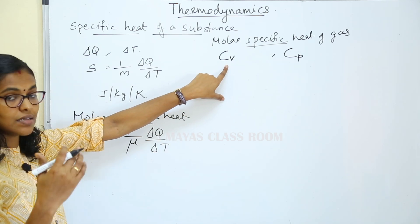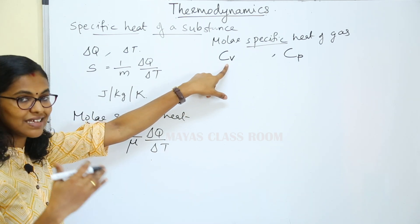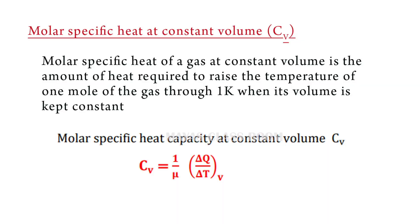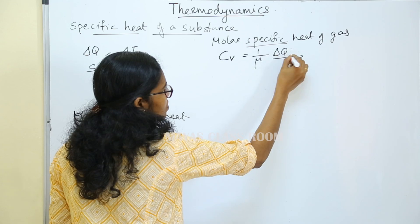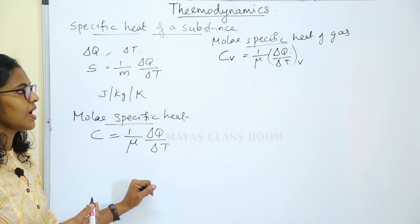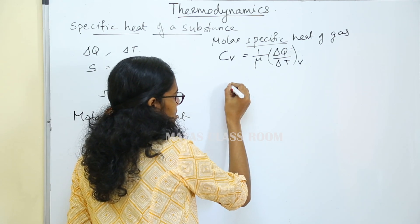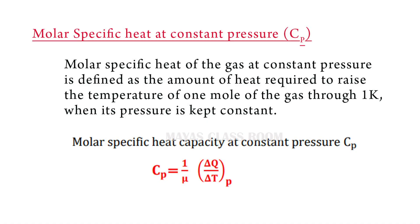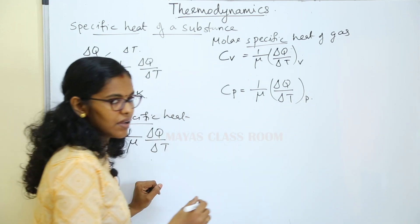Molar specific heat at constant volume is the amount of heat required to raise 1 mol of a substance through 1 Kelvin at constant volume. Then we have CV is equal to 1 by mu into delta Q by delta T at constant volume. CP is the amount of heat required to raise the temperature of 1 mol of a substance through 1 Kelvin at constant pressure, that is 1 by mu into delta Q divided by delta T at constant pressure.